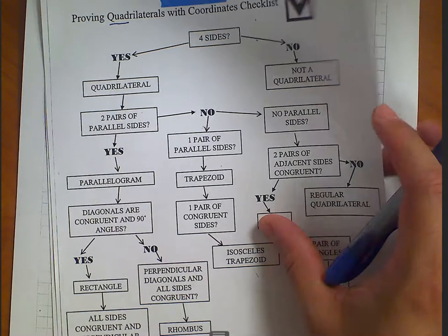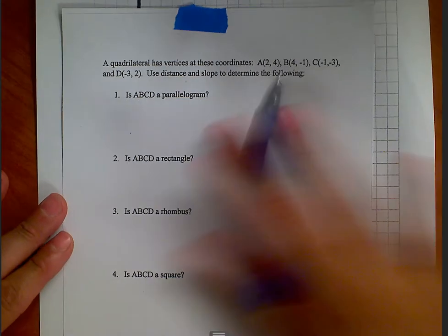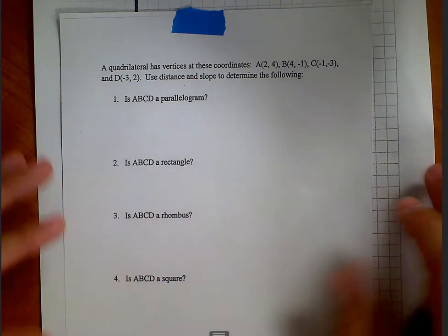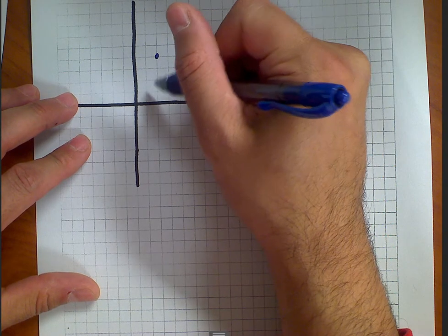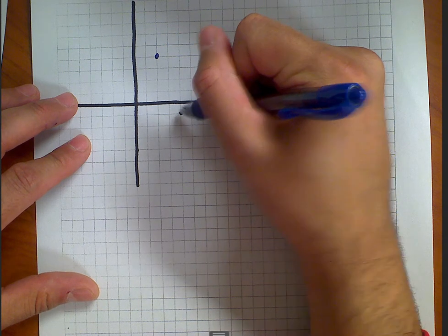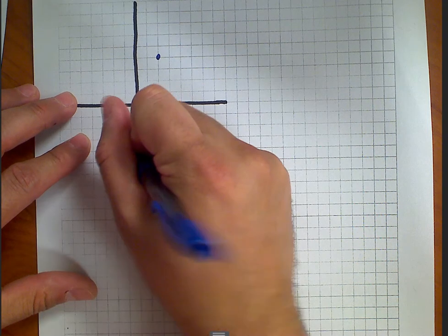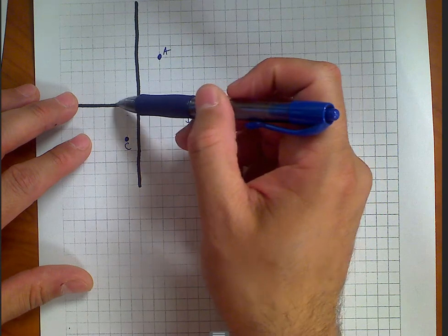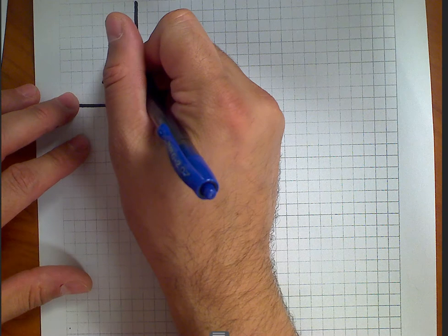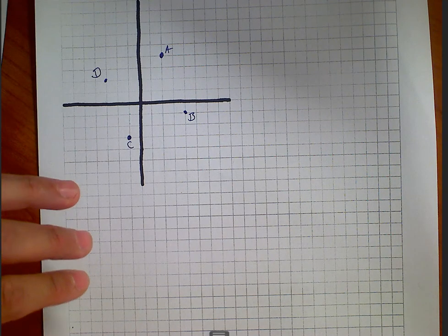Going through the first problem to follow the checklist. The problem gives coordinates: A is at (2, 4), B is at (4, -1), C is at (-1, -3), and D is at (-3, 2). Plotting each point on the graph paper.